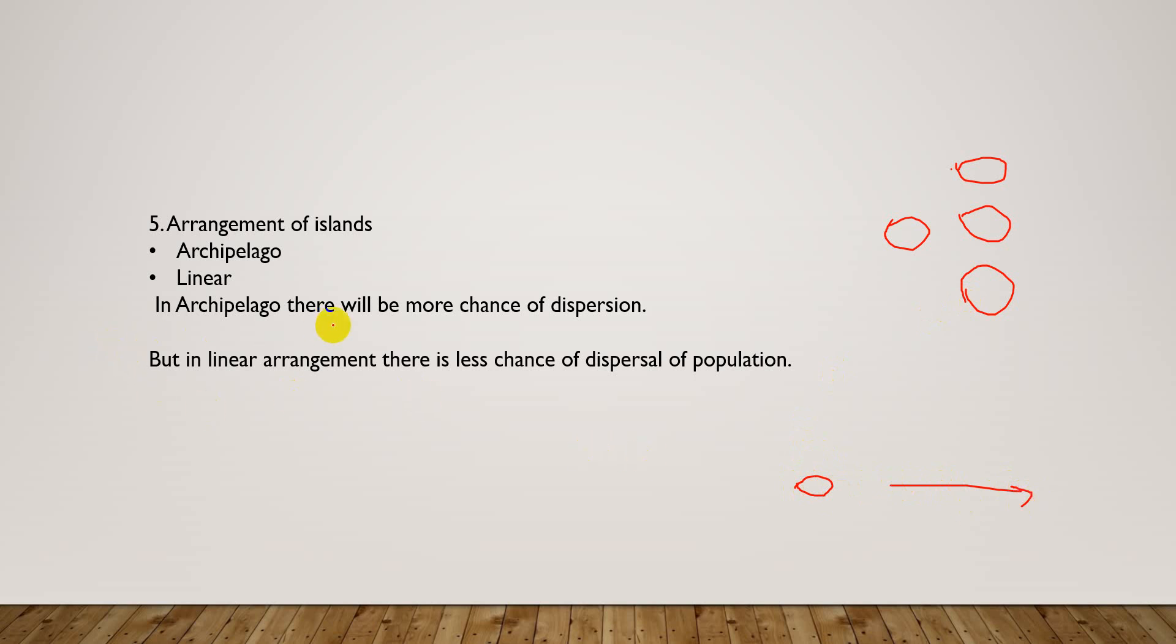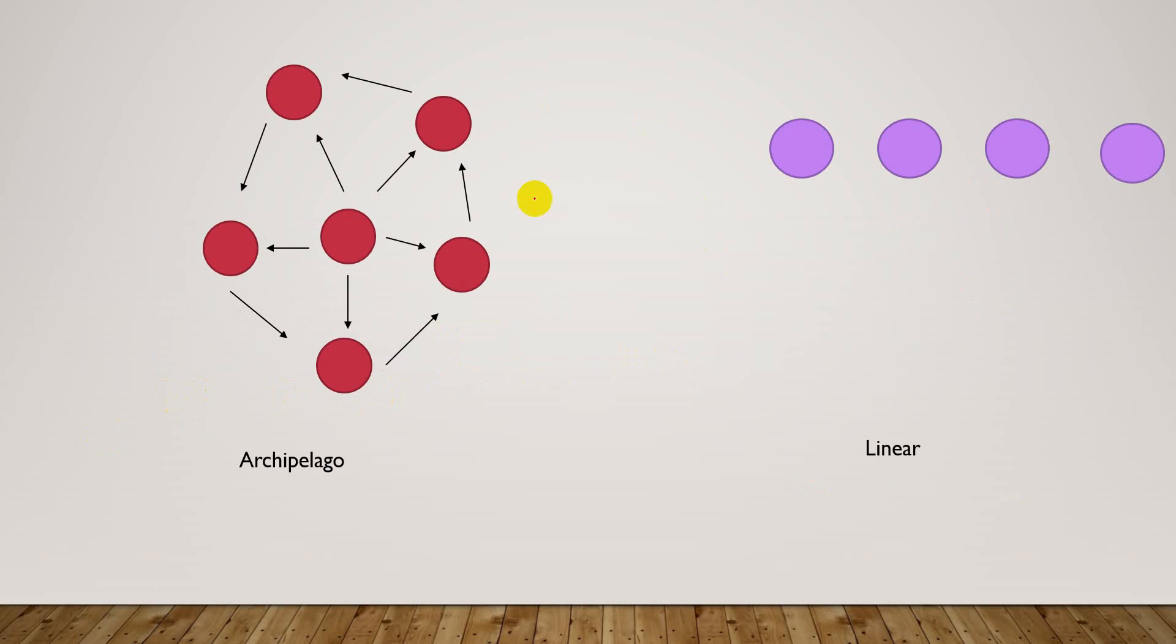In archipelago, there will be more chance of dispersal, but in linear arrangement there is less chance of dispersal of population. Here is an example of archipelago - population can disperse from here to here, here to here, here to here respectively. But in linear arrangement...